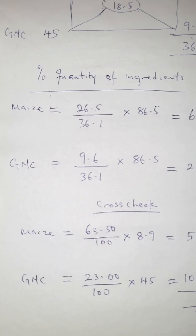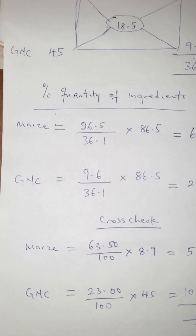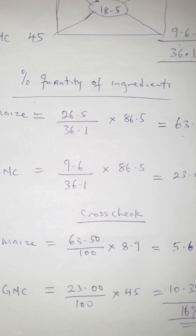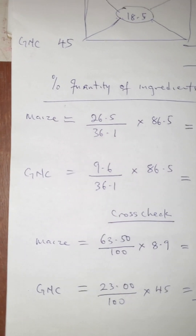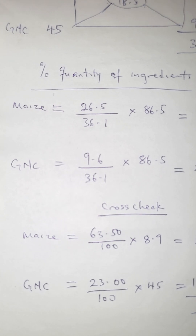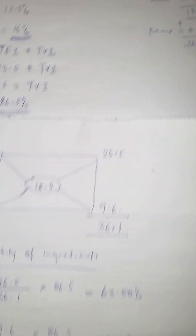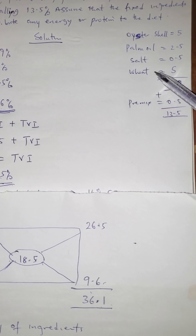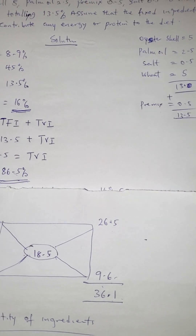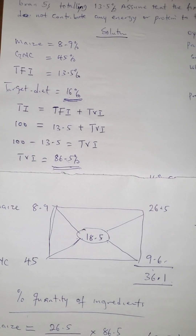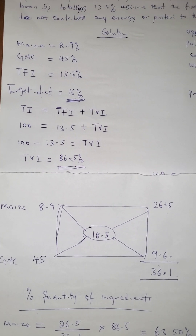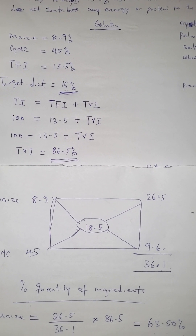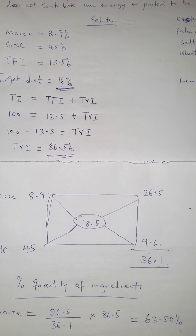So the quantity of Maize is 63.50% and the quantity of GNC is 23.00%, provided you are given those fixed ingredients — oyster shell, palm oil, salt, wheat, and premix — but they don't contribute either protein or energy to the feed that you are formulating. So that is it.